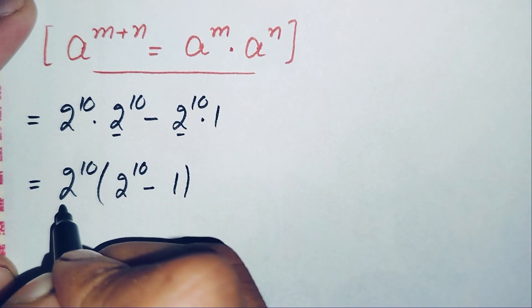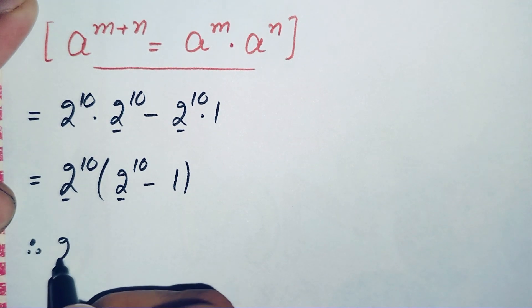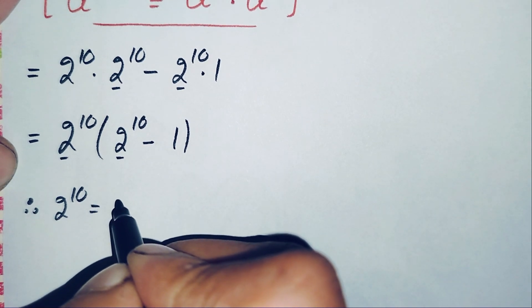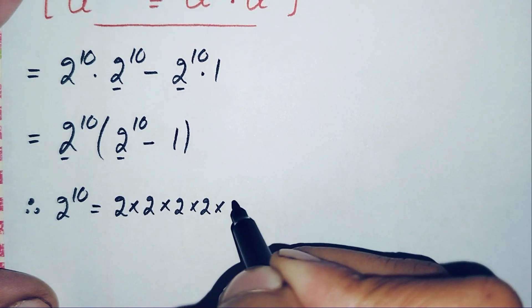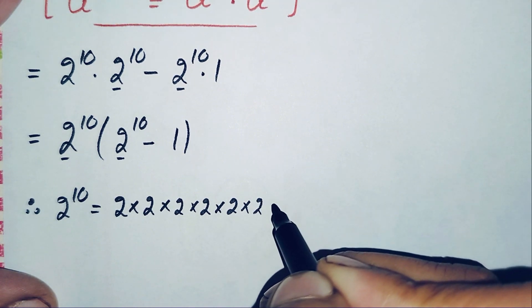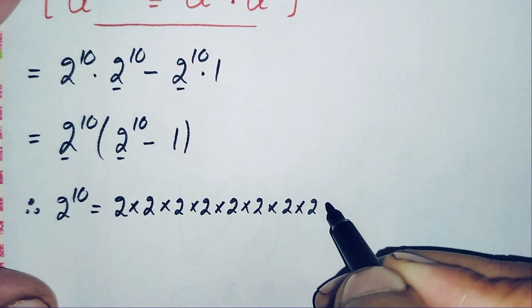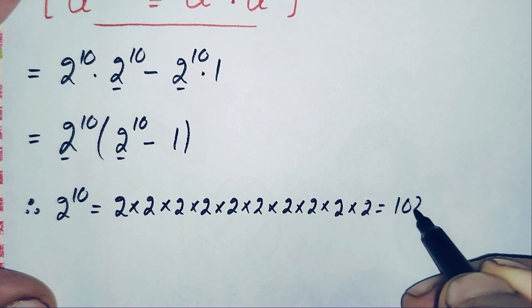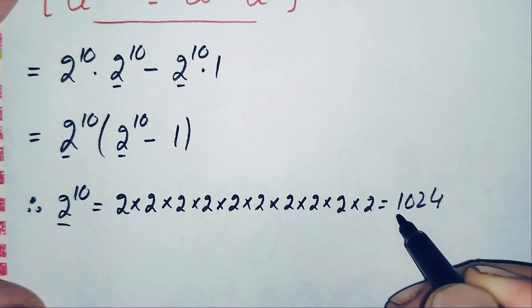In this step we will find the value of 2 raised to power 10. This means we multiply the base 2 a total of 10 times: 2 times 2 is 4, times 2 is 8, times 2 is 16, times 2 is 32, times 2 is 64, times 2 is 128, times 2 is 256, times 2 is 512, times 2 is 1024. So the value of 2 raised to power 10 is 1024.